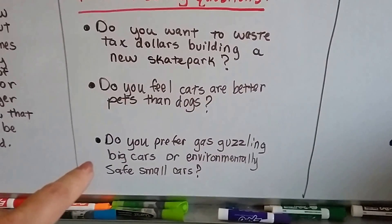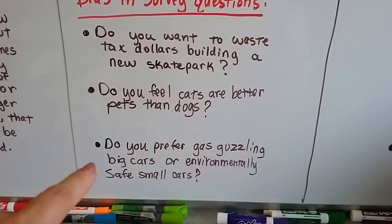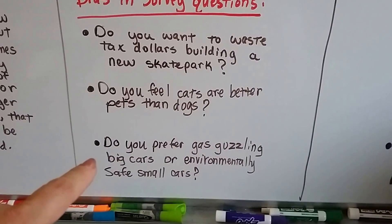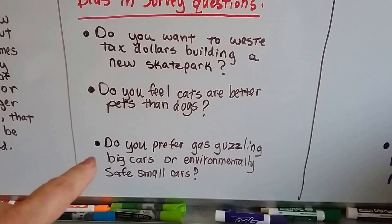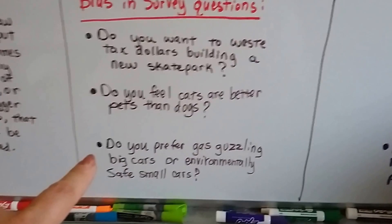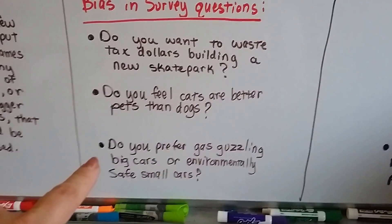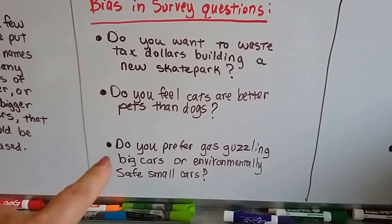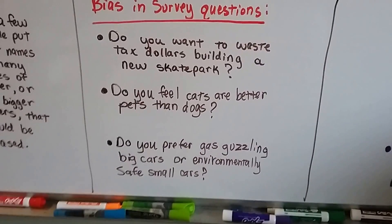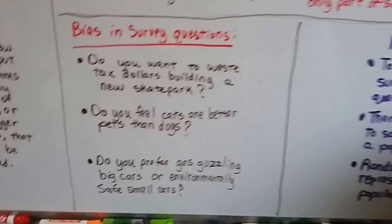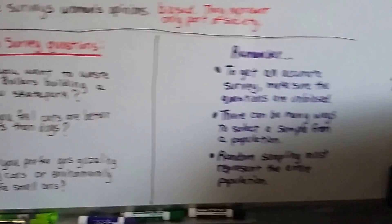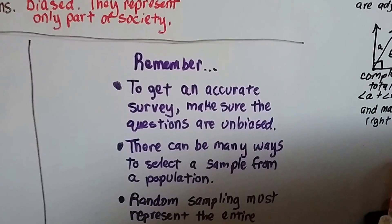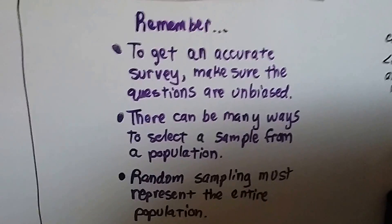Here's another biased one: "Do you prefer gas-guzzling big cars or environmentally safe small cars?" That's a biased question because people would be afraid to answer big cars even if they really liked big cars. So remember, to get an accurate survey, make sure the questions are unbiased.